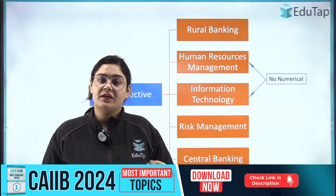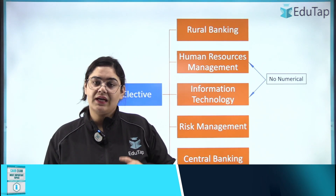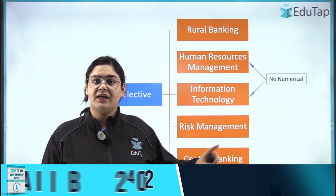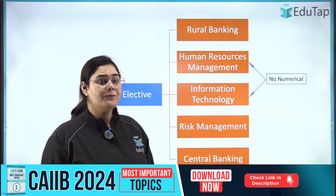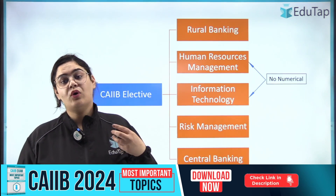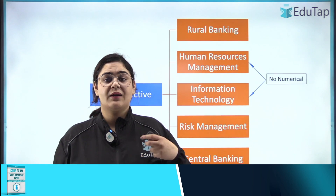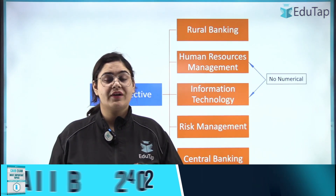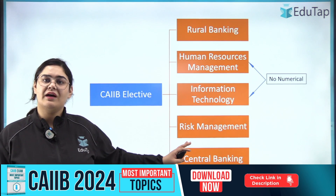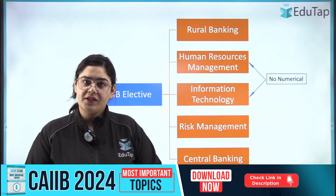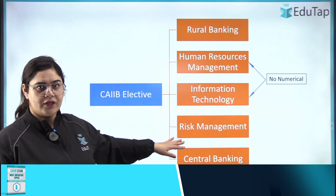Otherwise, after you clear it, you can also pursue a different diploma. My recommendation is that it is time-constrained, so avoid the Risk Management elective. Then there is Central Banking. If you have interest in RBI, working in RBI, or monetary policy, then you can study it. Otherwise, you can also avoid it.